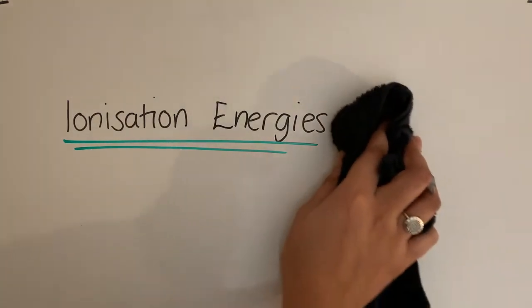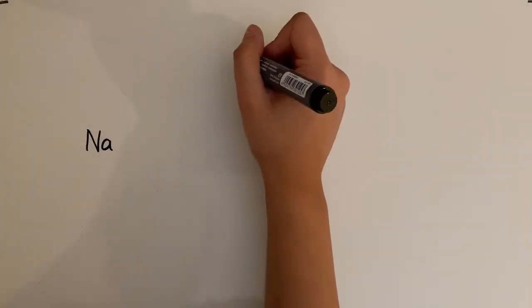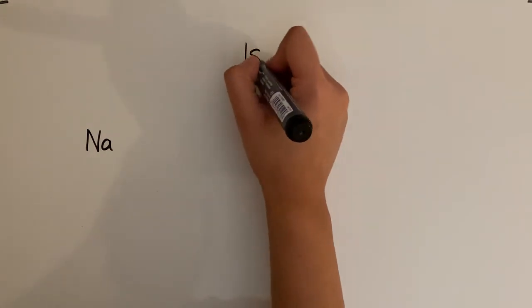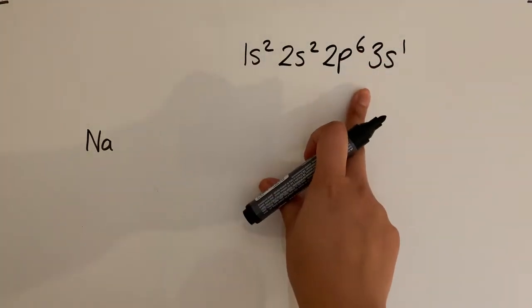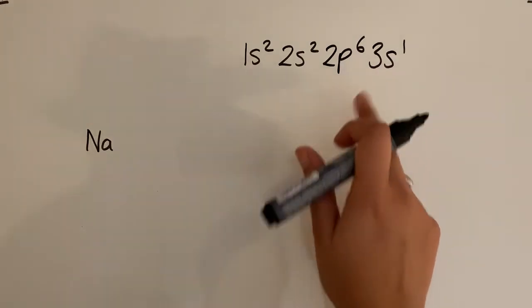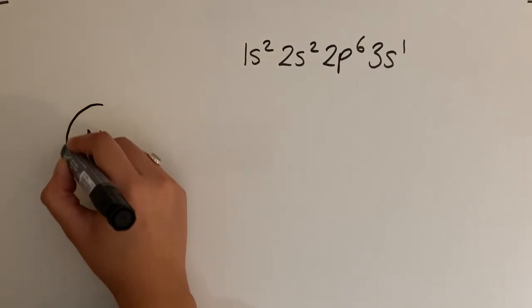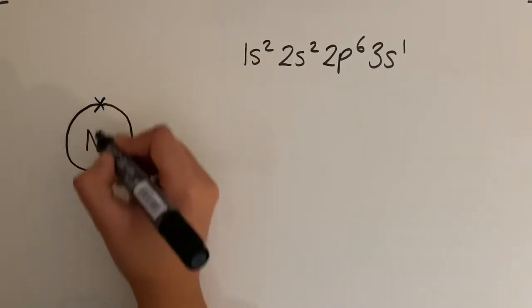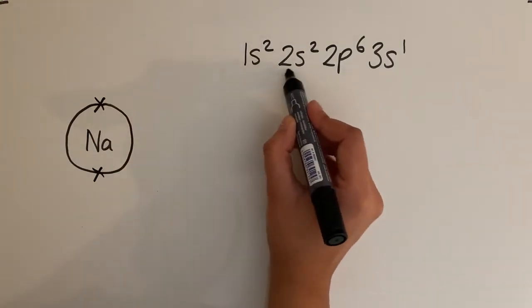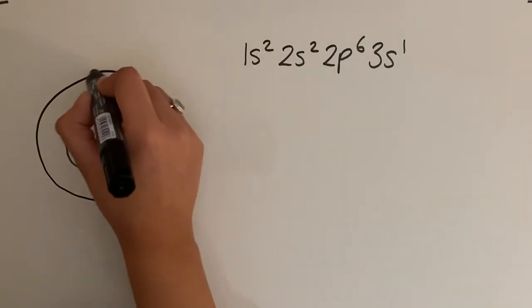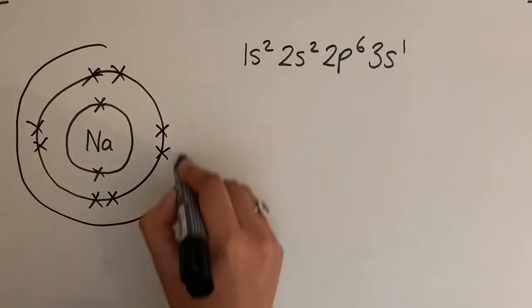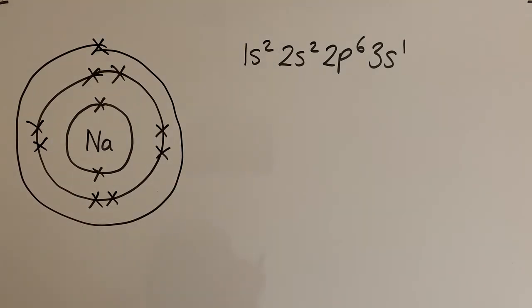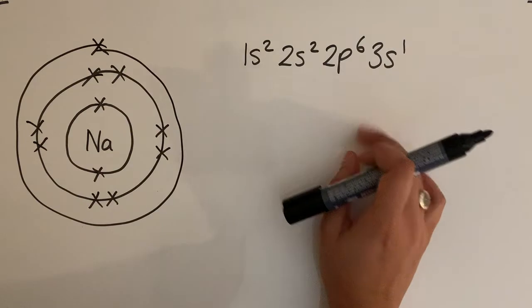Let's look at a sodium atom. Sodium has 11 electrons. The electron configuration is 1s2, 2s2, 2p6, 3s1. It is an S-block element because the outer electron is found in an S subshell. In terms of electrons in shells: the first shell has two electrons, the second shell has eight electrons, and the third shell has one electron. It's a group one metal, so it has one electron in the S subshell.